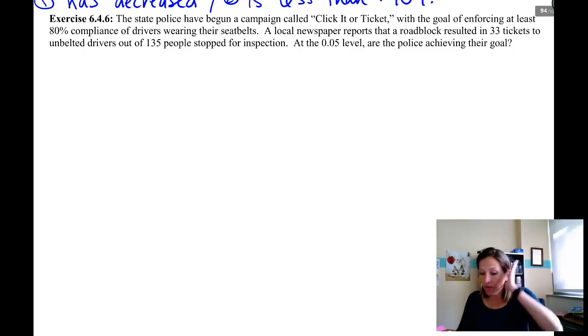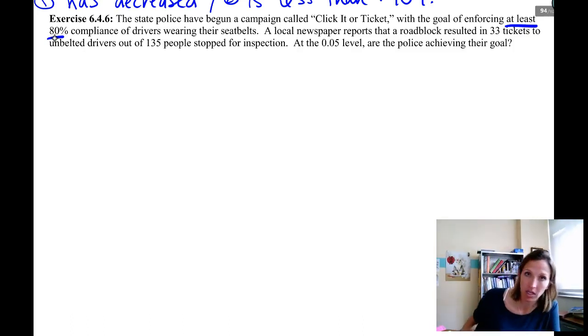So if we read through this together, we look and see that our goal is to enforce at least 80% compliance with Click It or Ticket. A local newspaper reports that a roadblock resulted in 33 tickets to unbelted drivers out of 135 people stopped for inspection. So we're skirting on the edges of not being okay for all of our requirements. We want to see are the police achieving their goal at a particular significance level. So we're going to set up our hypothesis test.